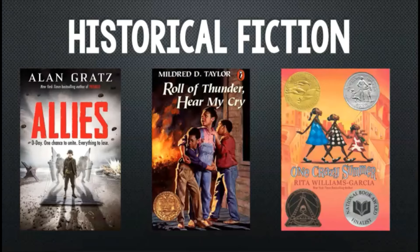The second novel, Roll of Thunder, Hear My Cry, focuses on the hardships of the Logans, a black farming family in Mississippi during the Great Depression. The third novel, One Crazy Summer, is set in the 1960s and focuses on the Black Panther movement in the context of one African American family. Each of these novels take place in the past and include accurate historical events — World War II, the Great Depression, and the Civil Rights movement — but have made-up characters.